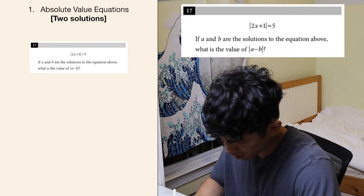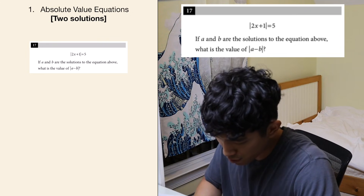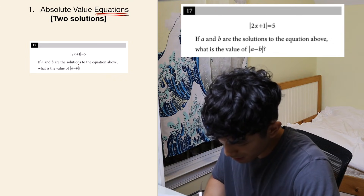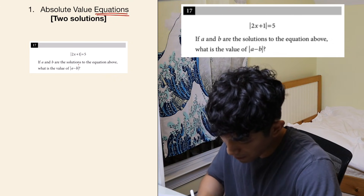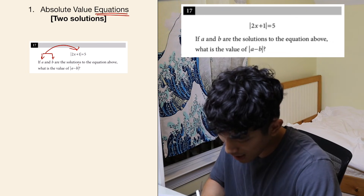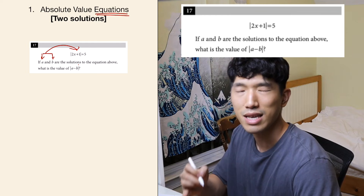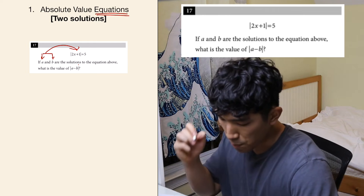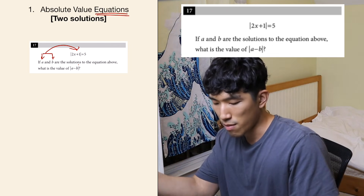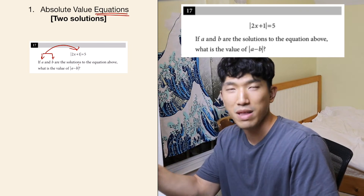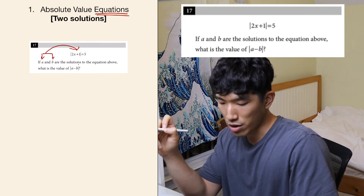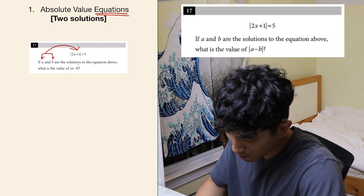So the first type is absolute value equations. If A and B are the solutions to the equation above, what's the value of absolute value of A minus B? A and B are values of X that make the equation true. There are a couple of ways to find out what A and B can be. One is just plugging and chugging — plugging a bunch of numbers for X — but it's going to take a long time. Another way is by using the copy and paste method.